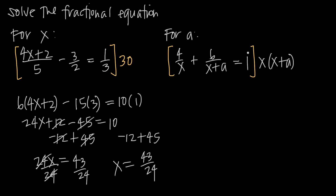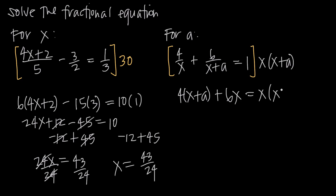We multiply that common denominator by every term on both sides. When we multiply x times (x plus a) by 4 over x, the x's cancel, leaving us with 4 times (x plus a). When we multiply by 6 over (x plus a), the (x plus a) cancels, leaving 6x. When we multiply by 1, we get x times (x plus a). Distributing 4 across (x plus a) gives 4x plus 4a, and distributing x across (x plus a) on the right gives x squared plus ax.